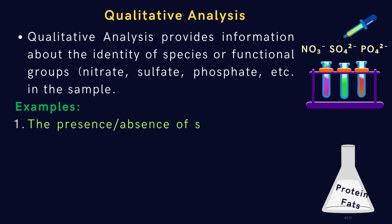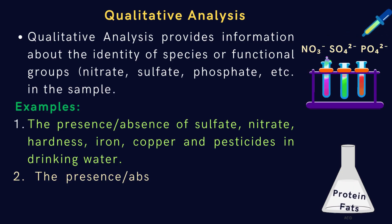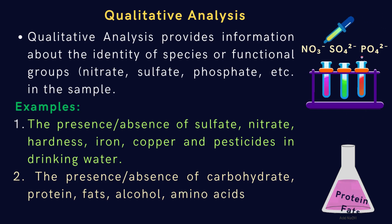Examples: The presence or absence of sulfate, nitrate, hardness, iron, copper, and pesticide in drinking water. The presence or absence of carbohydrate, protein, fats, alcohol, amino acids in food samples, which is tested by classical or instrumental methods.